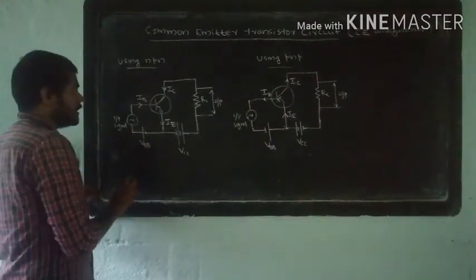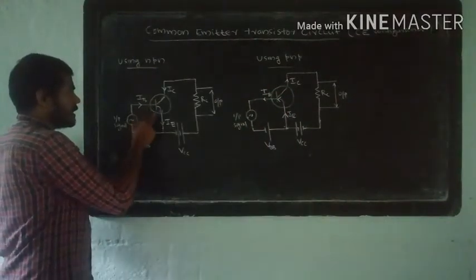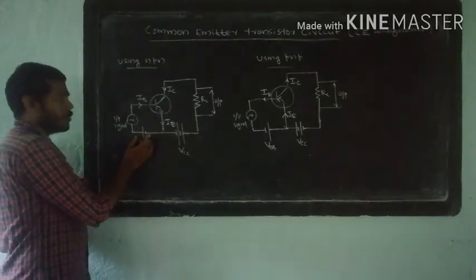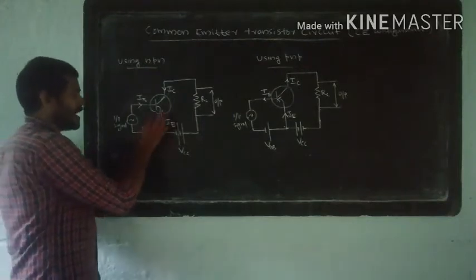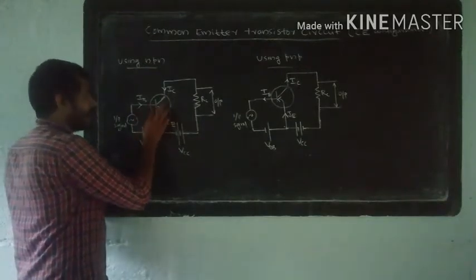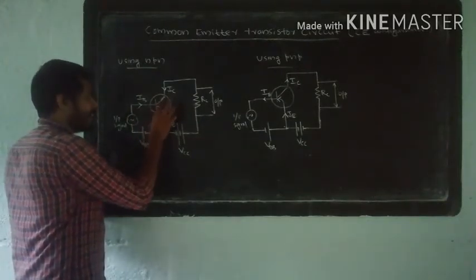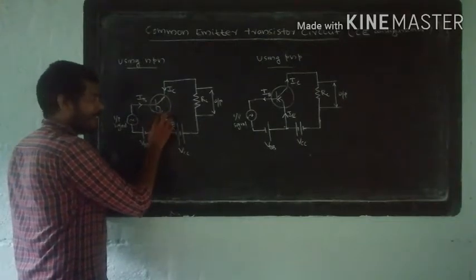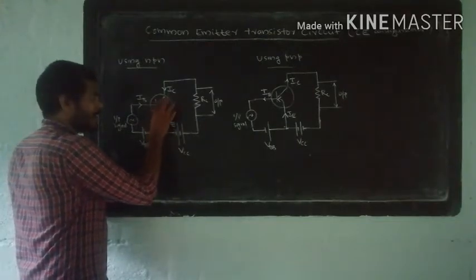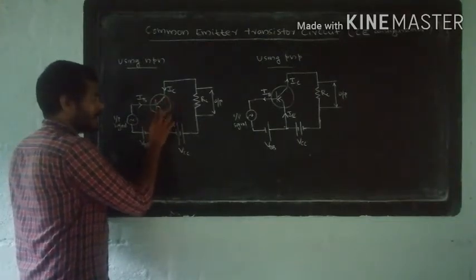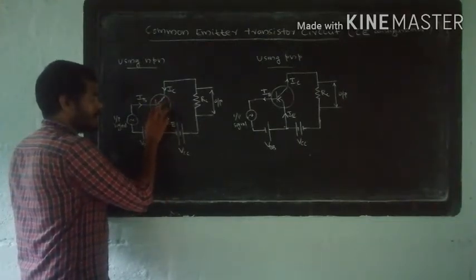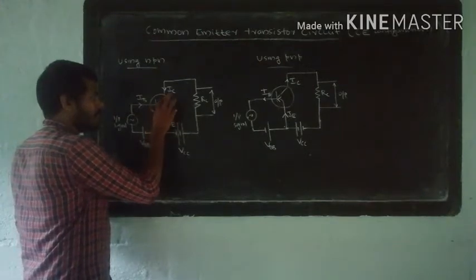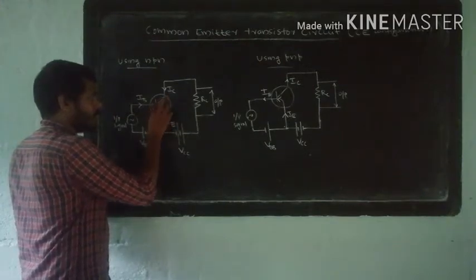VBB is placed to forward bias the emitter junction. For an NPN transistor: emitter is negative, base is positive, collector is negative — that is n-p-n.